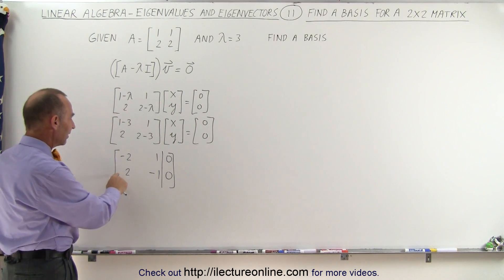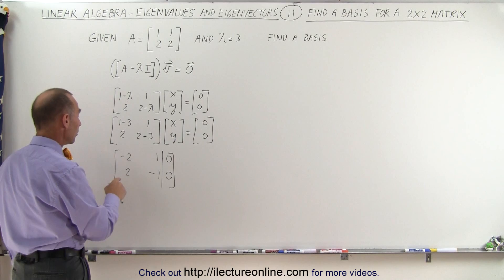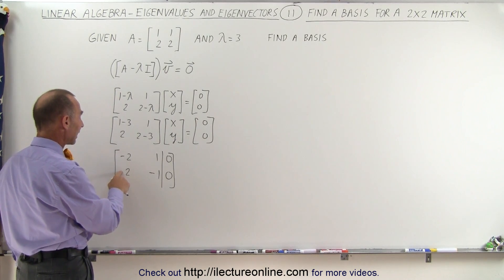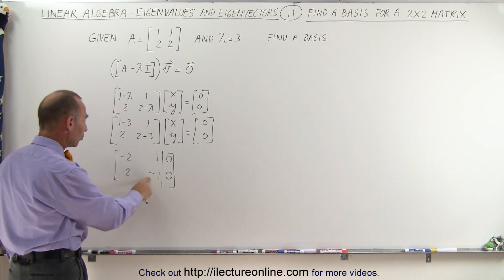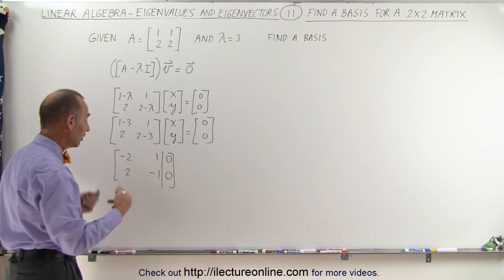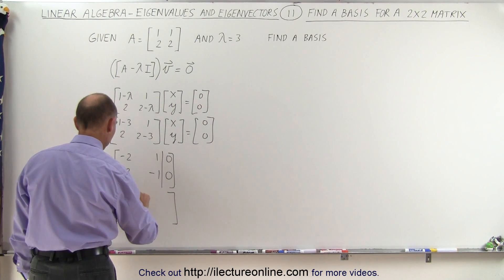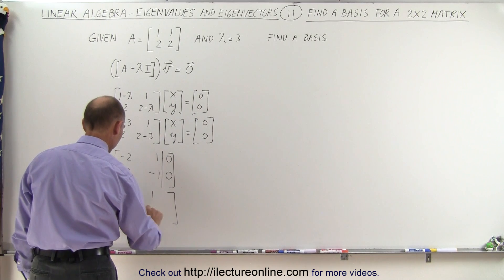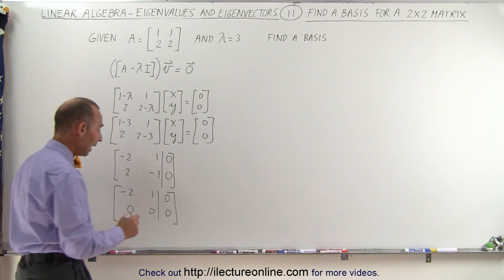Now notice that the second row is the negative of the first row, which means if we multiply the second row by negative 1, every term by negative 1, then we get negative 2 plus 1 and 0, which means it's exactly the same as the first row. This therefore reduces to negative 2, 1, 0, 0, augmented with 0 and 0, and from this we can then conclude that